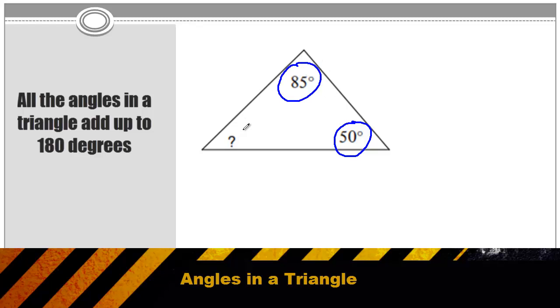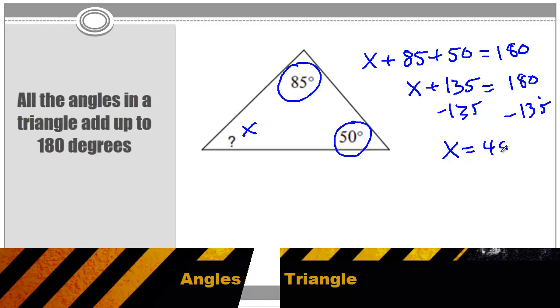The first rule of triangles is that all the angles add up to 180 degrees. So if we label this missing angle as x, we could write the equation that x plus 85 plus 50, that equals 180 degrees. Or x plus 135 equals 180, subtract 135 from both sides, and I get x is equal to 45.